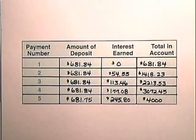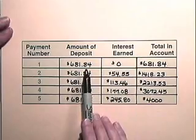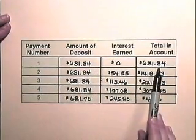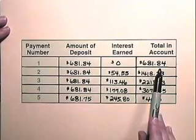In year number 1, the amount of the deposit is $681.84. The interest earned is none. So the total in the account at the end of the first year is $681.84.